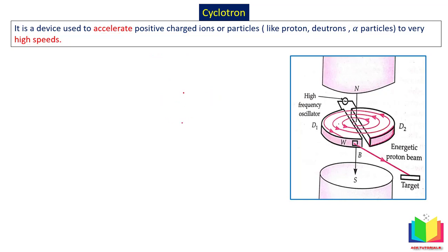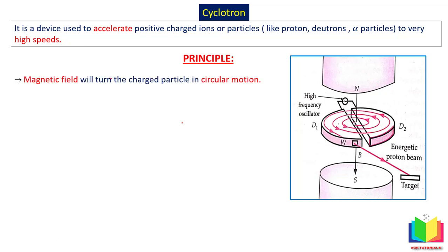We will discuss the principle, construction, working, and some associated formulas related to the cyclotron. In a cyclotron, we have two fields: a magnetic field and an electric field. The role of the magnetic field is that it turns the charged particle into circular motion — this was discussed in the video on motion of a charged particle in a magnetic field.